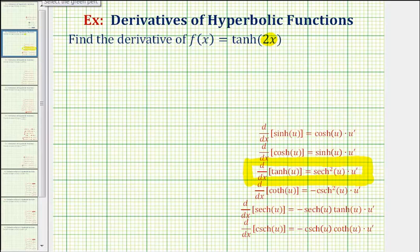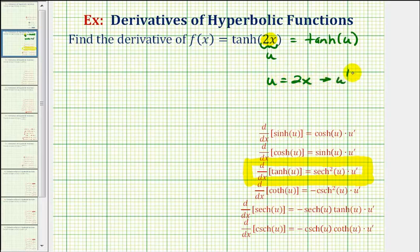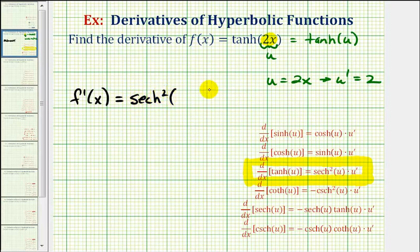Looking at our function, if it's helpful, we can let u equal two x and think of this as hyperbolic tangent of u, where u is equal to two x, and therefore u prime would be equal to two. So f prime of x is equal to hyperbolic secant squared u times u prime, or hyperbolic secant squared of two x times two.